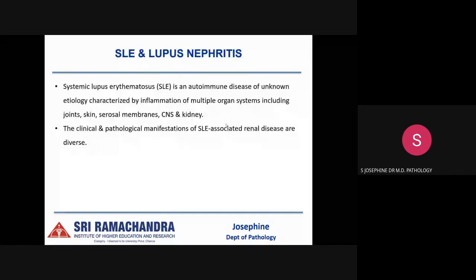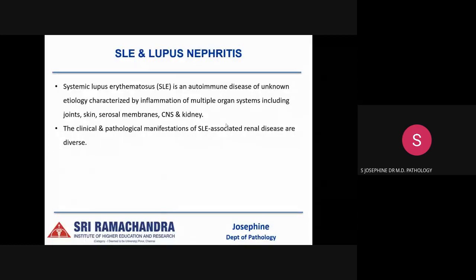Moving on to the discussion: systemic lupus erythematosus is an autoimmune disease of unknown etiology characterized by inflammation of multiple organ systems, including joints, skin, serosal membranes, CNS, and kidney. Clinically apparent renal disease occurs in up to 50% of SLE patients, usually within one year of disease onset, and is a major cause of morbidity and mortality.